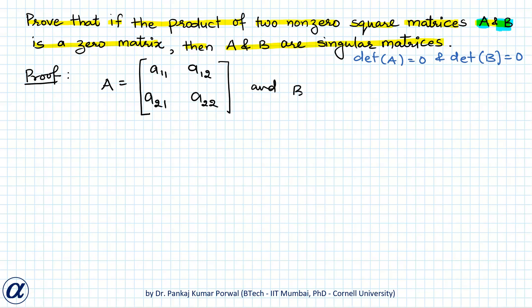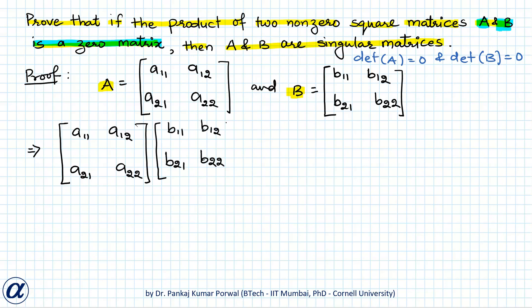And B equals b11, b12, b21, b22. Now we are given that the product of the matrices is zero. That implies A into B should be a zero matrix, so I will multiply these two matrices.